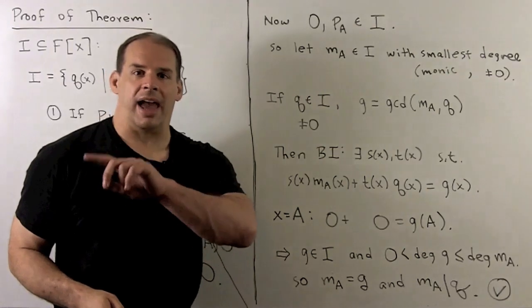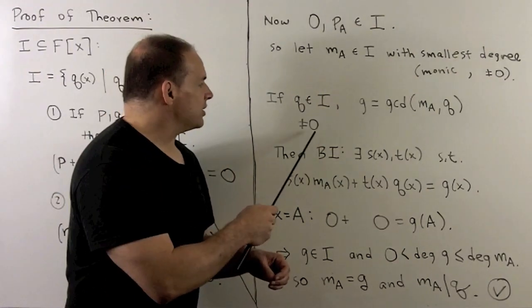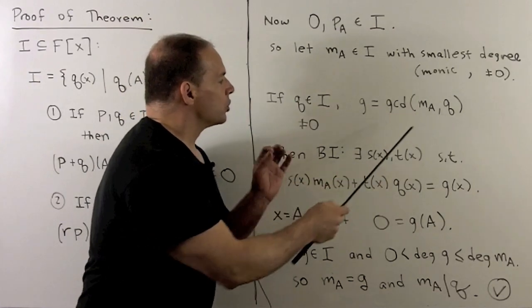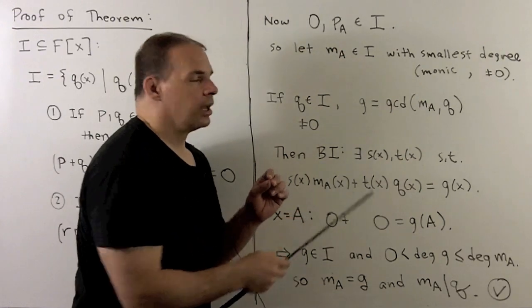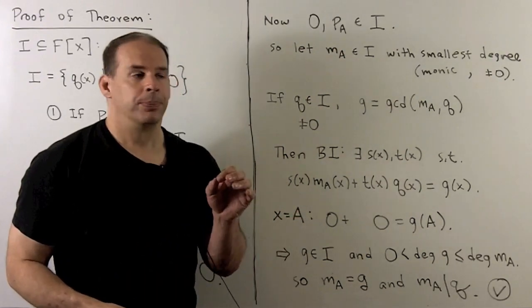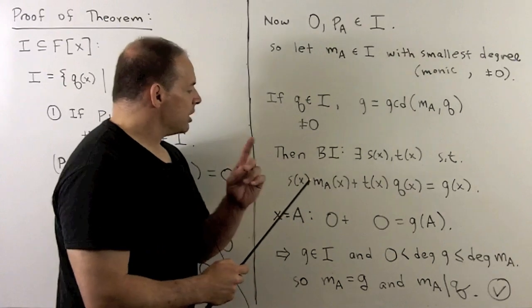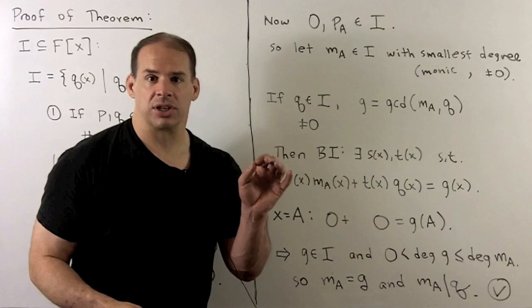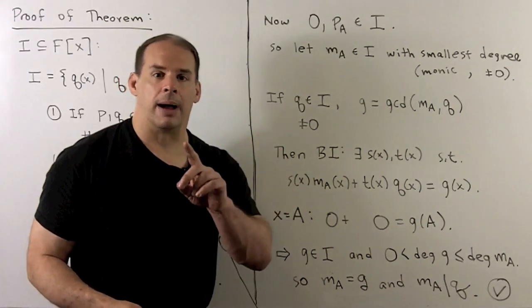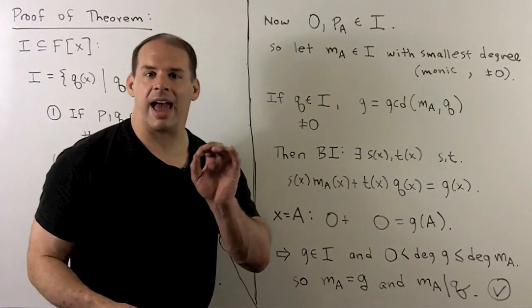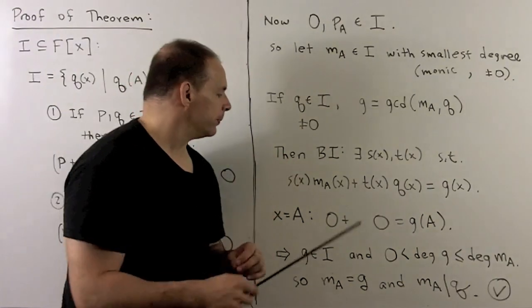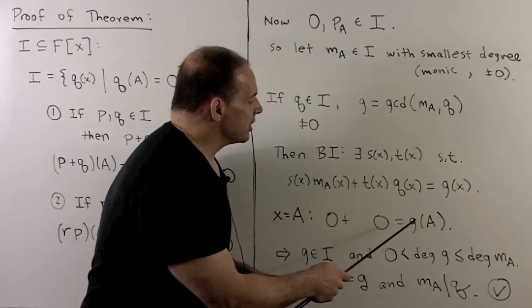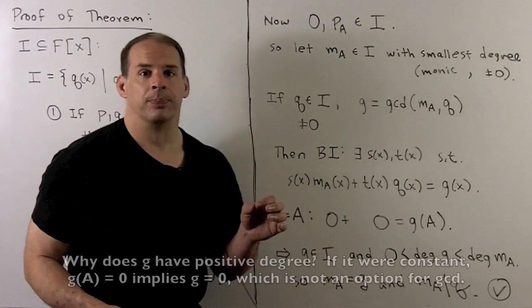Now, if we pick any Q in I, say non-zero, I could form the greatest common divisor of M_A and Q. So I'll call that the polynomial G(x). By Bezout's identity, there exists polynomials S and T such that S times M_A plus T times Q is equal to G(x), the greatest common divisor. Now, if I substitute in A for X to get a matrix equation, then I have zero plus zero equals G(A), which means that G is an element of I.